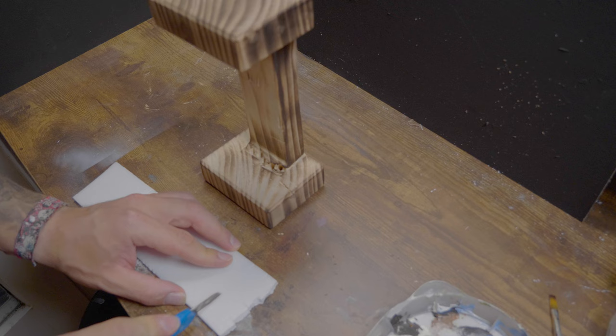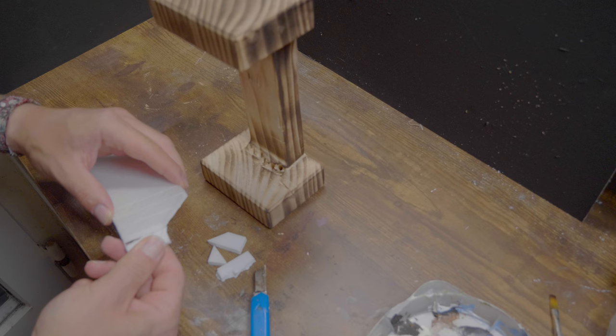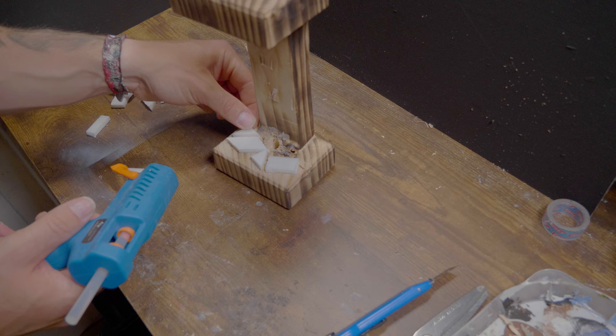For the reef I cut different sized pieces of styrofoam and glue them down with a hot glue gun. I work my way up from the bottom getting thinner and thinner so that a nice shape is created.